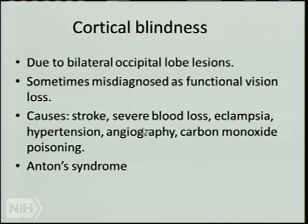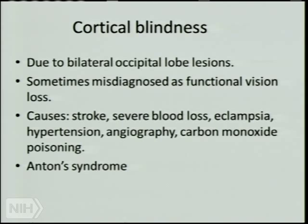Some selected diseases: cortical blindness occurs with bilateral occipital lesions — no signals get past there. The eyes look fine to an ophthalmologist, so it could be misdiagnosed as functional vision loss or malingering. Causes tend to do a lot of damage: stroke, severe blood loss, hypertension, carbon monoxide poisoning. That part of the brain is a watershed area, so if blood pressure drops, it's more affected.